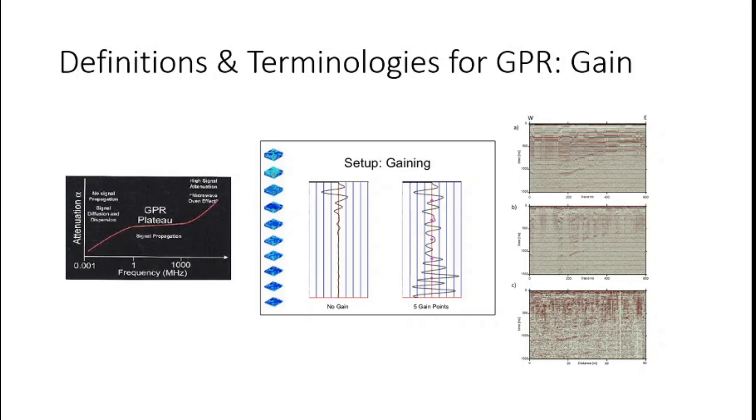Coming back to another slide, on the left hand side there is a chart showing the attenuation factor alpha with respect to frequency. The frequency range is between 0.001 megahertz to up to some sort of gigahertz. The variation of the curve is basically in the same proportion, but in the range between one to one megahertz you can see GPR plateau. The attenuation almost remains constant as the frequency increases.